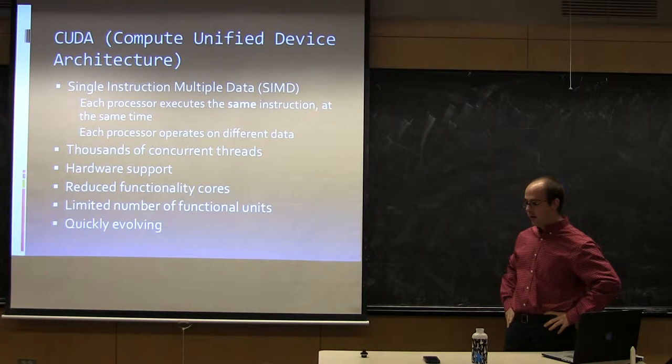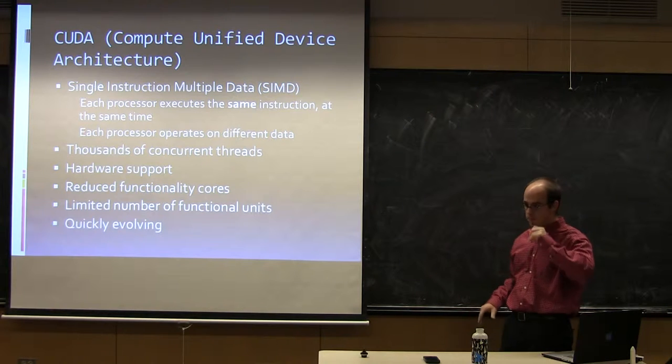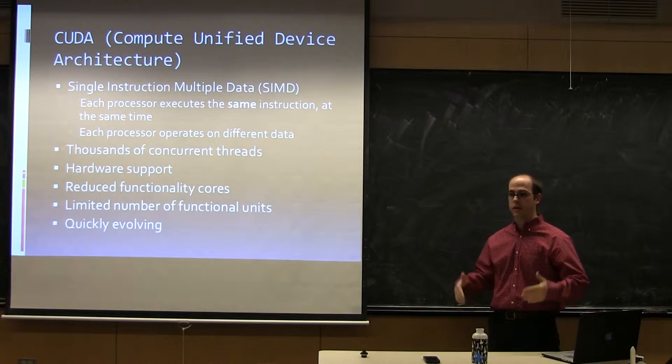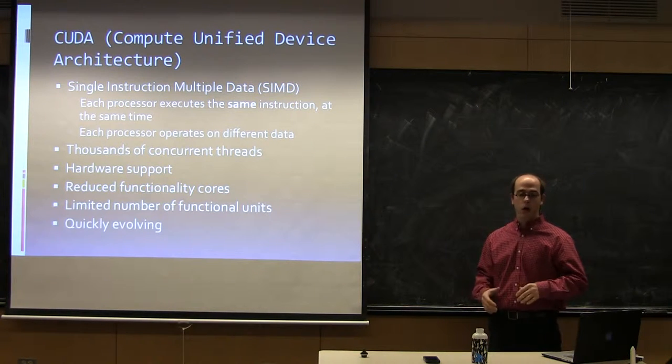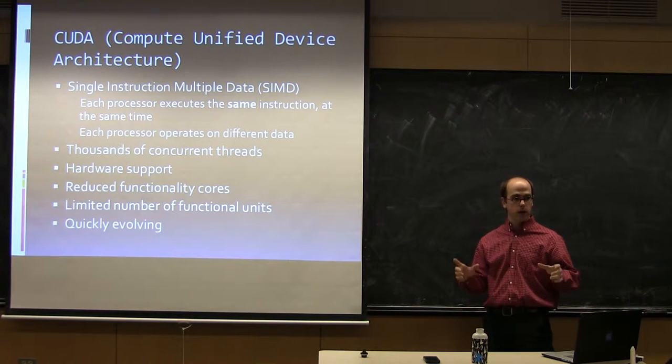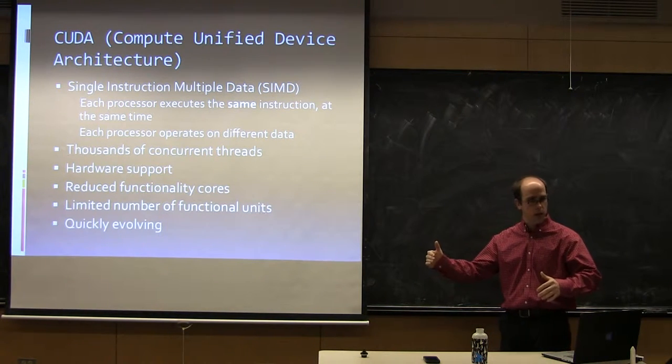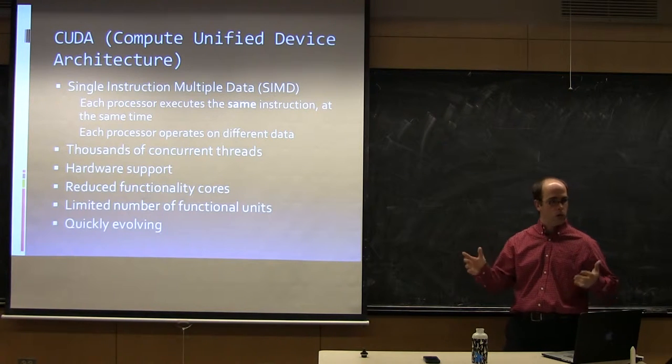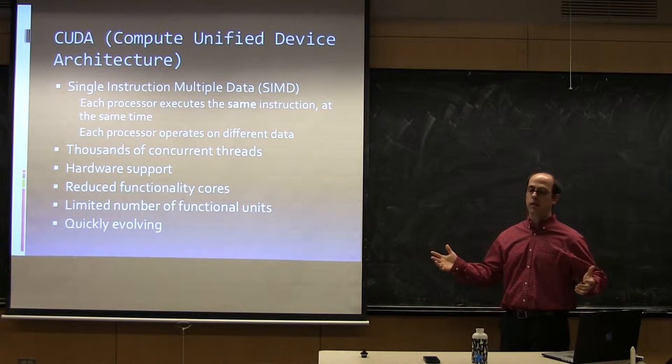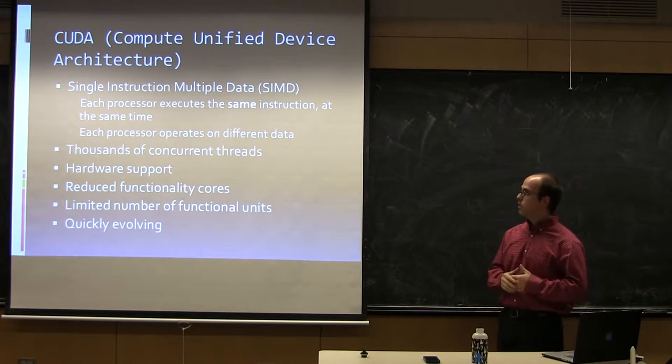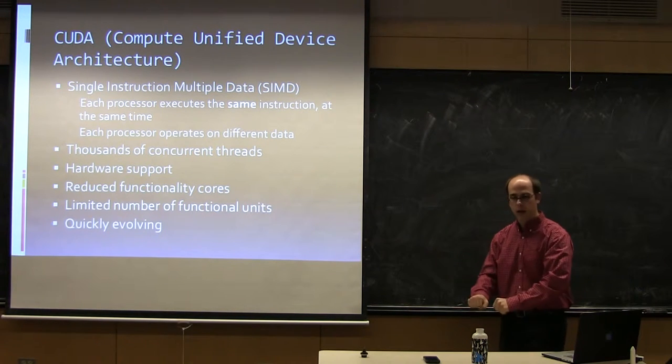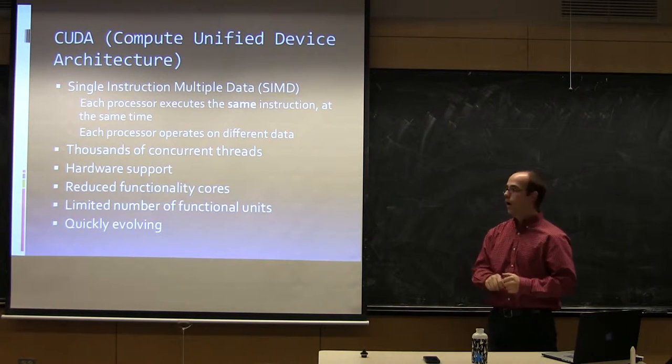Basically what it is, is you have some number of processors, let's call it N, doesn't matter how many, but every processor executes the exact same instruction at the exact same time. On a multi-core machine or on a cluster, you have standard CPUs, and they can be doing things a little bit out of step. But in a GPU and in a CUDA architecture, it's lock step. Every processor does this, turn the crank, every processor does the next thing.